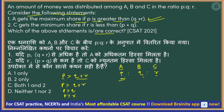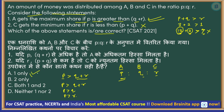Statement 2: C gets the minimum share if r < p + q. Does r < p + q mean r is the smallest? Not necessarily. For example, if p = 15, q = 2, and r = 7: then r < p + q (7 < 17) but r is not the smallest — q = 2 is smaller. So Statement 2 is not always true. Only Statement 1 is always true. Answer: option A.